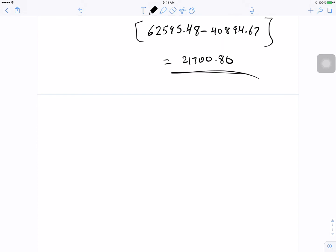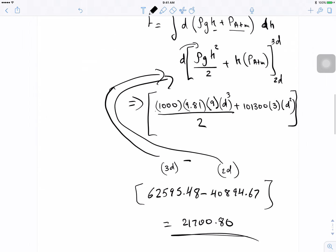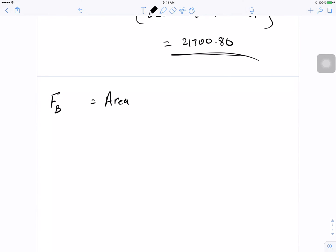And then the other equation that you can just apply, if you don't really want to know how to do it, is just the force on B is going to be the area of B times d times 5 divided by 2, d, density of the water, g, plus P ATM.